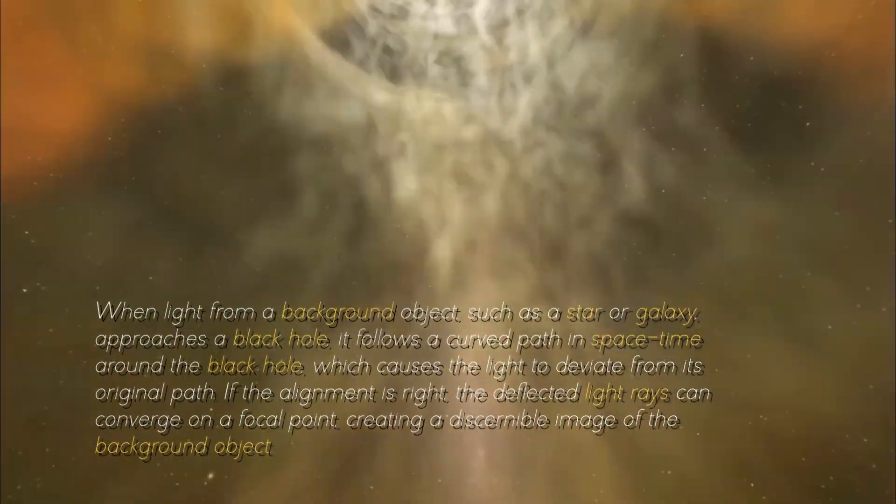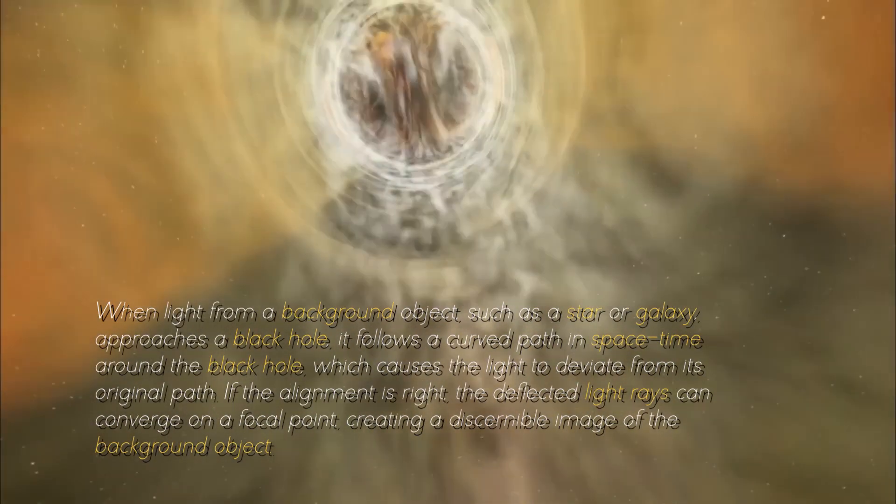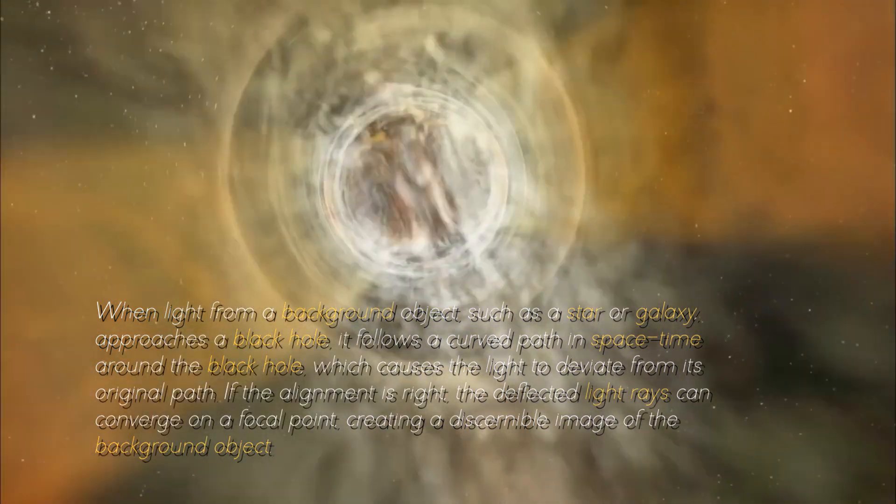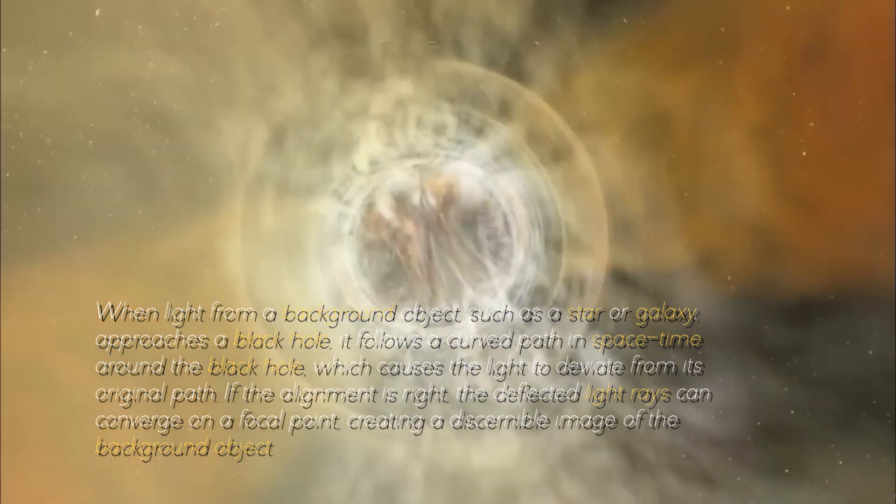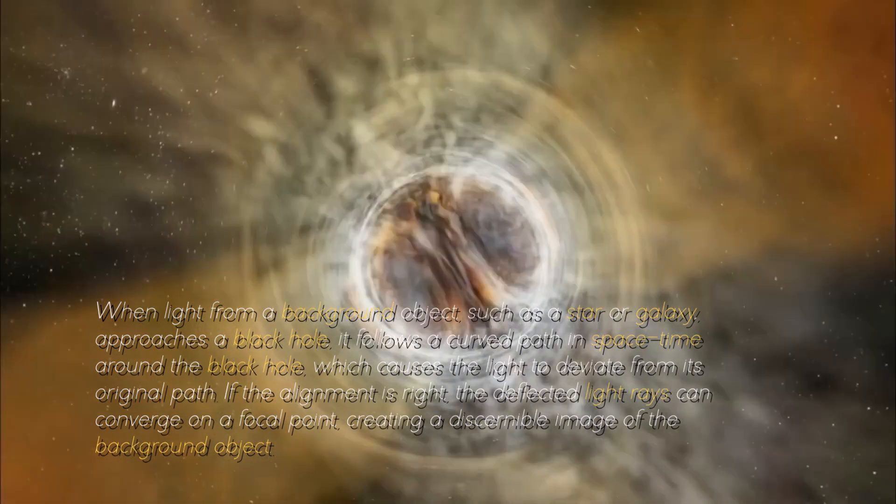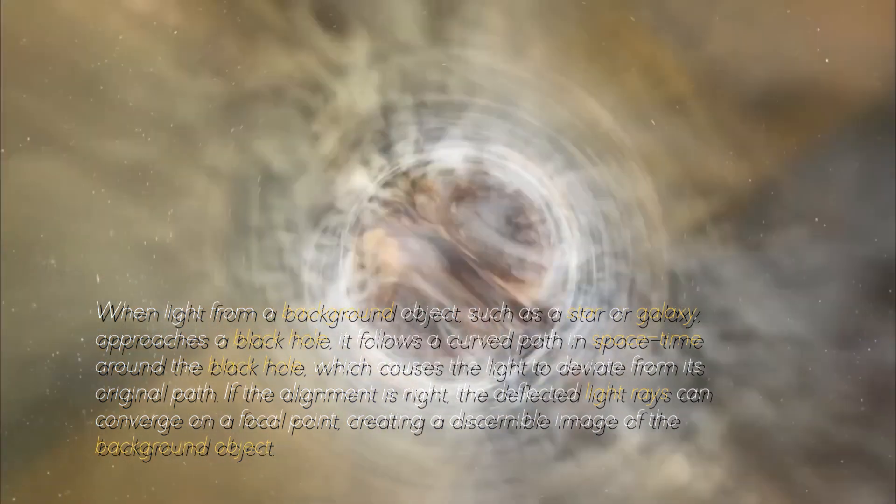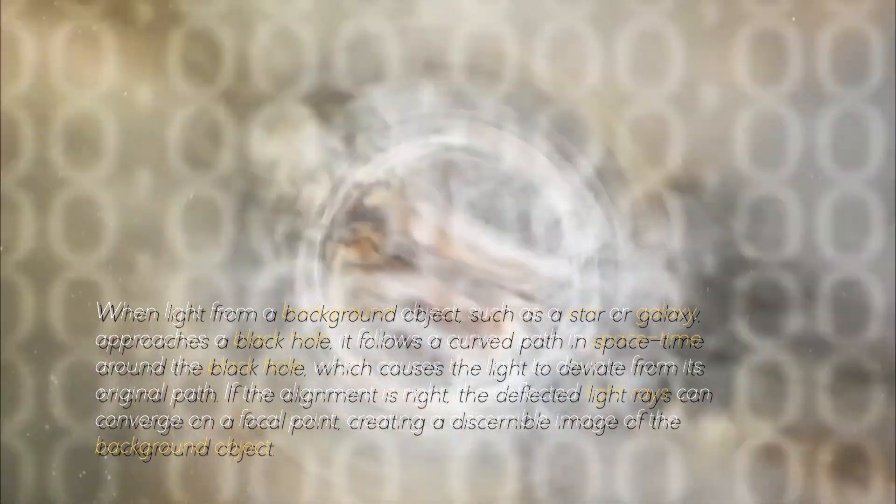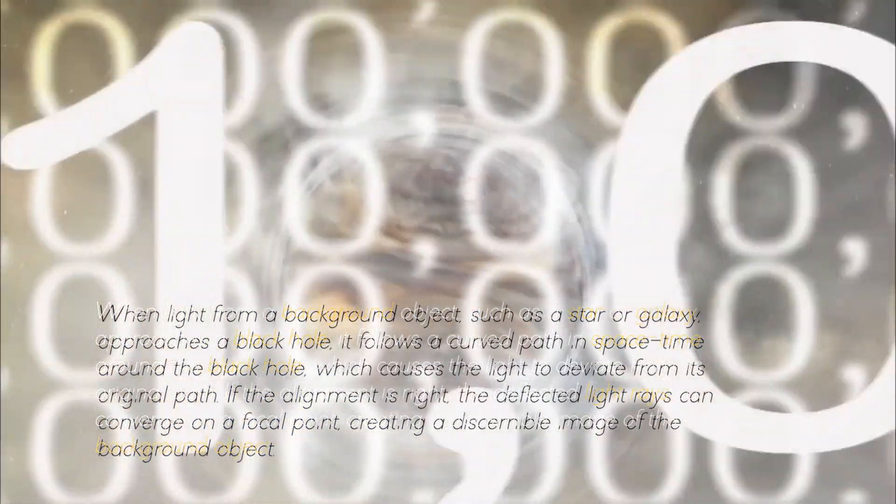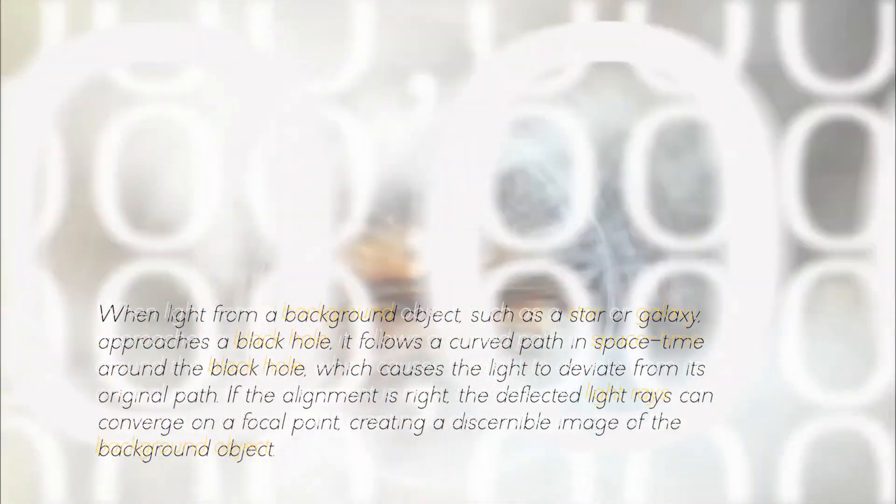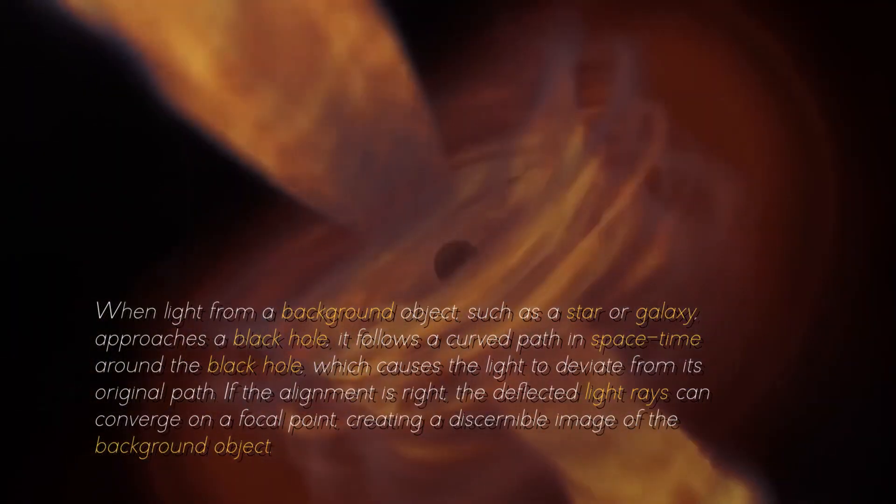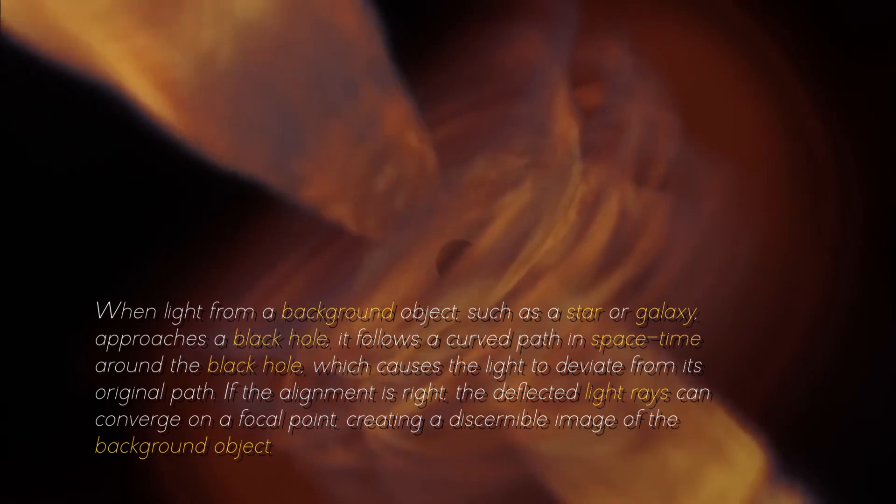When light from a background object, such as a star or a galaxy, approaches a black hole, it follows a curved path in spacetime around the black hole, which causes the light to deviate from its original path. If the alignment is right, the deflected light rays can converge on a focal point, creating a discernible image of the background object.